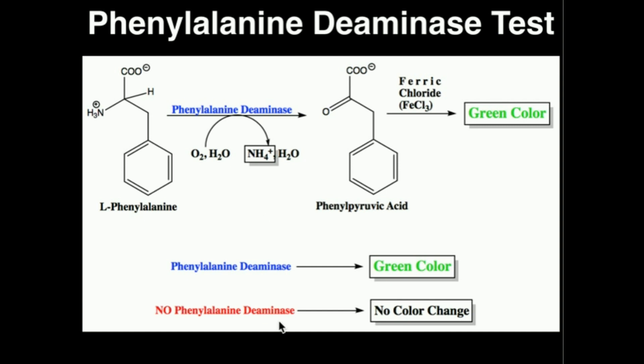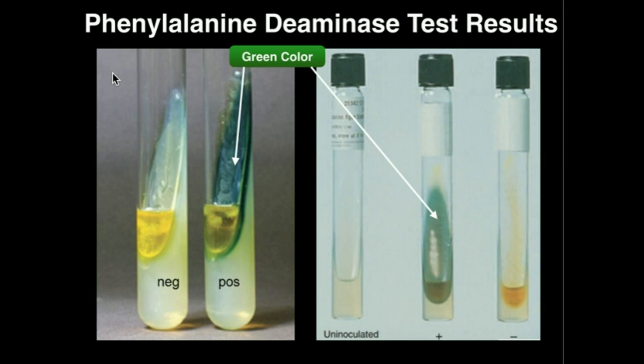A negative phenylalanine deaminase result is signaled by no color change at all. As we will see in a demonstration video later, we're going to inoculate the bacteria on an ordinary slant with ferric chloride and then incubate it. You can see here there's no color change to green, so this is a negative result for phenylalanine deaminase, meaning we do not have Proteus or Providentia genera.